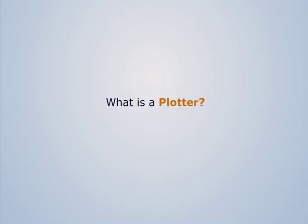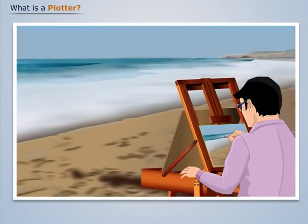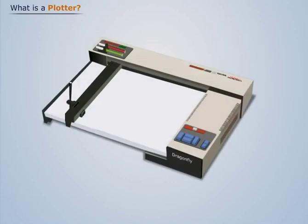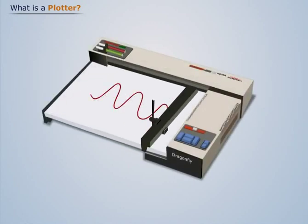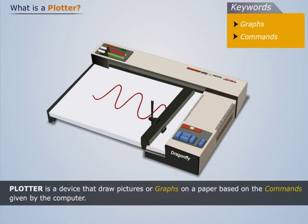What is a plotter? We all have seen painters. A painter observes a scene or picture and then traces it as it is on the paper using his paintbrushes. Similarly, plotters also trace the graphic records of the given variables. Thus, a plotter is a device that draws pictures or graphs on a paper based on the commands given by the computer.